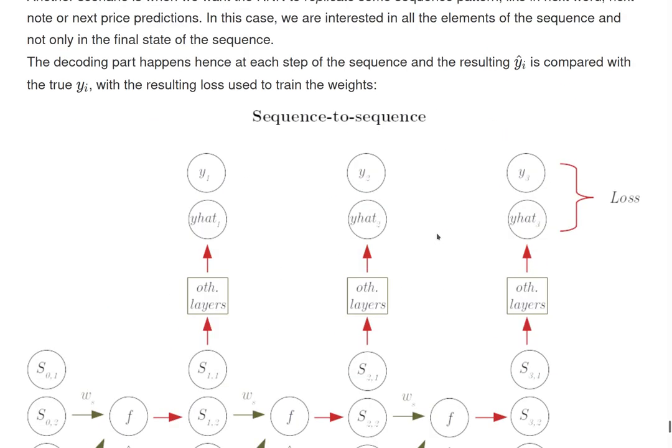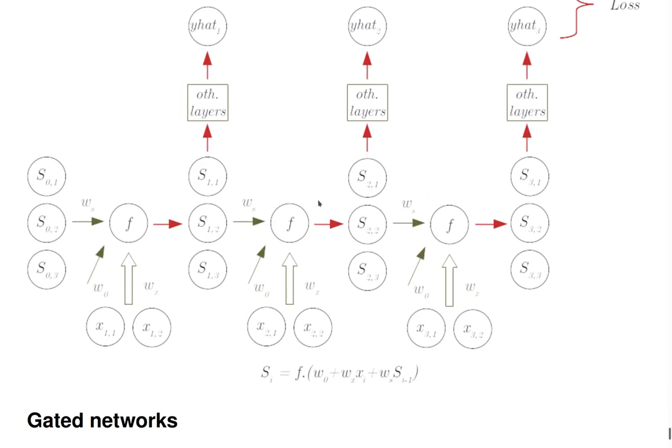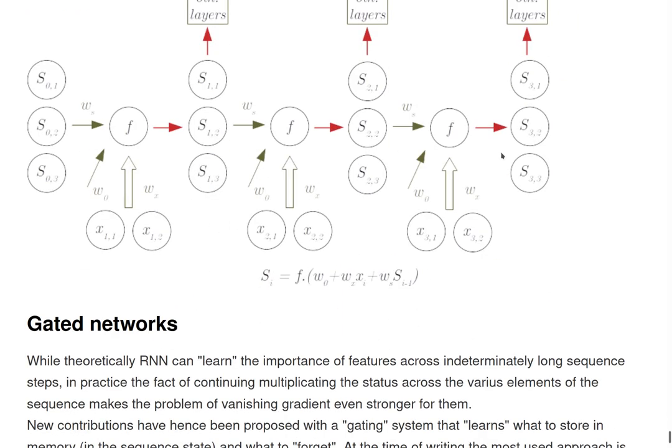A final remark. While in theory recurrent neural networks can learn the importance of the features independently of where they are in the sequence, so they can learn that for example this element is very important even many steps away in the sequence, in practice the way that we do the training is to compute the gradient, to compute the importance of the weights for the loss function. And that is to compute the gradients, and again we are going to use the chain rule, but you realize that when the sequence is very long, for recurrent neural networks the problem of vanishing gradients will be even more strong.